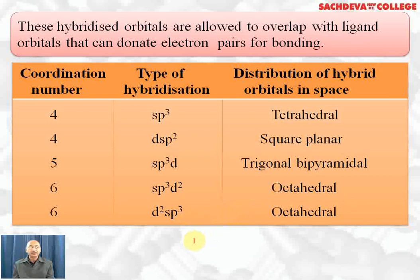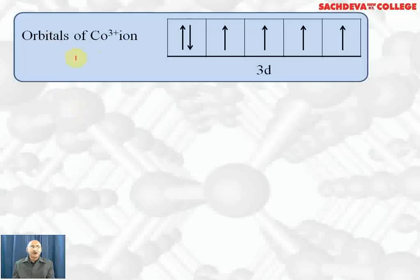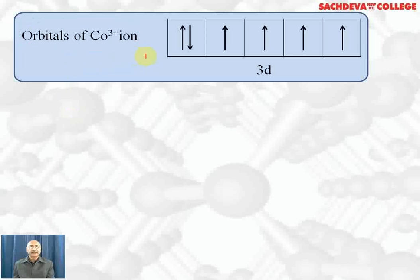If coordination number is two, hybridization will give a linear shape. Let's take up the orbitals of cobalt(III) ions. Cobalt (Z=27) has configuration 4s² 3d⁷. When forming Co³⁺, two electrons from 4s and one electron from 3d are removed, leaving a 3d⁶ configuration.